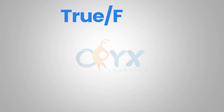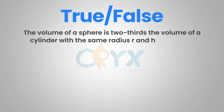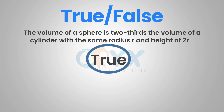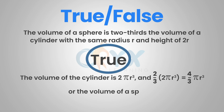Now back to our true and false question: the volume of a sphere is two-thirds the volume of a cylinder with the same radius r and height of 2r. This is a true statement. The volume of a cylinder is 2 pi r to the third and the volume of a sphere is four-thirds pi r to the third. So if I take two-thirds times 2 pi times r to the third, that gives me four-thirds pi r to the third, making it a true statement.